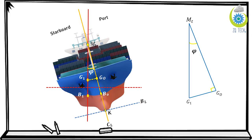Here is the triangle obtained from the ship condition in the case of heeling towards the starboard side. You can see that we obtained the point G1, which is the new center of gravity, and G0, which is the original center of gravity. Similarly, B0 is the original center of buoyancy and B1 is the new center of buoyancy. We obtained the triangle G1, G0, and M — this is a right triangle, and we need to find phi, the healing angle.